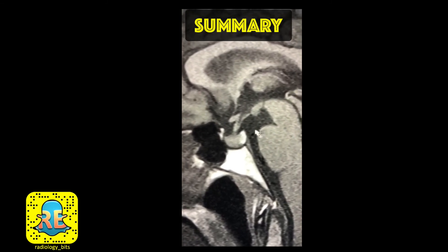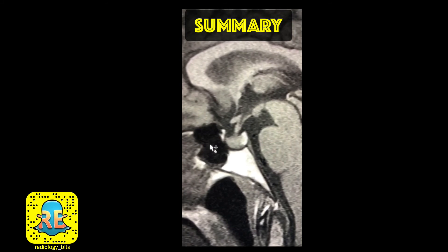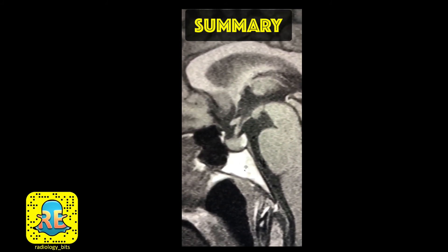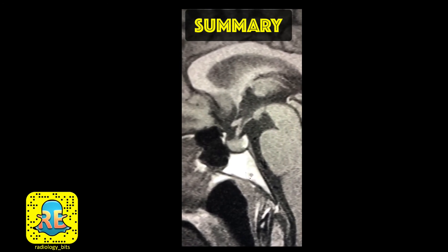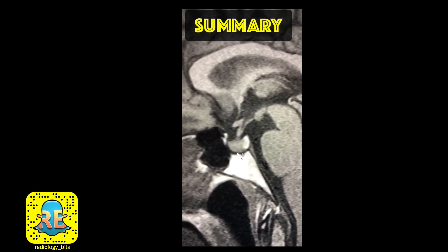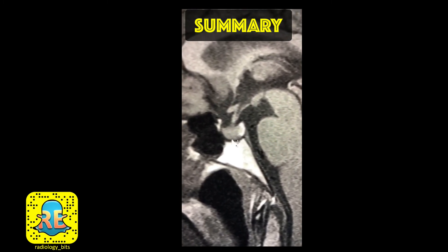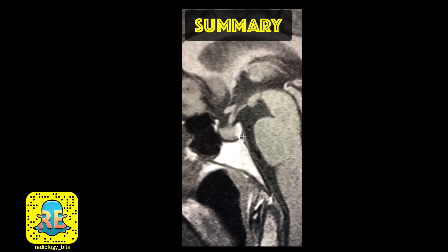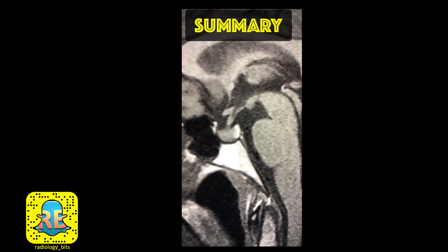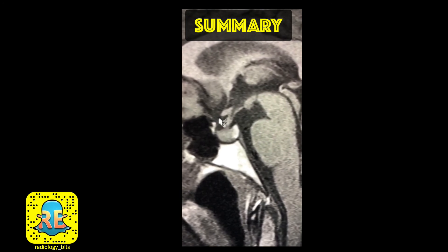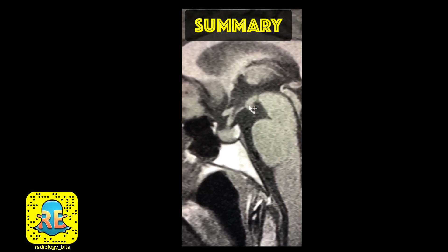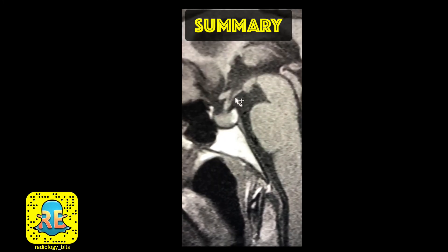In summary: CSF is dark on T1 while air is even darker; fat such as that in the sphenoid and clivus appears bright on T1. The pituitary gland varies in size and shape with age and hormonal status. It has a darker anterior pituitary and a bright posterior pituitary containing ADH. The suprasellar cistern contains CSF, and the floor of the third ventricle includes the mammillary body, tuber cinereum (part of the hypothalamus), pituitary stalk, and optic chiasm.